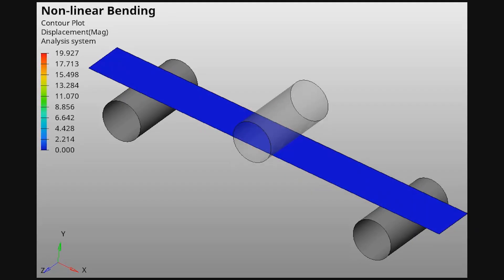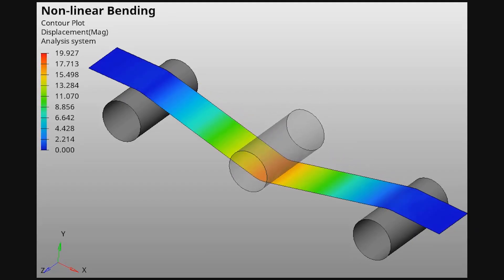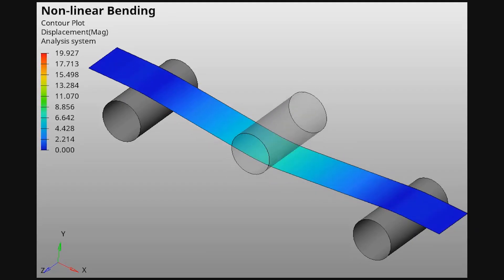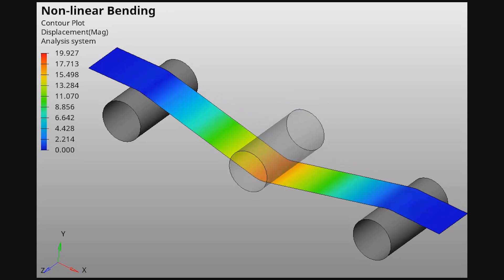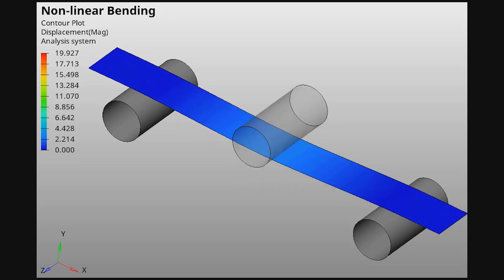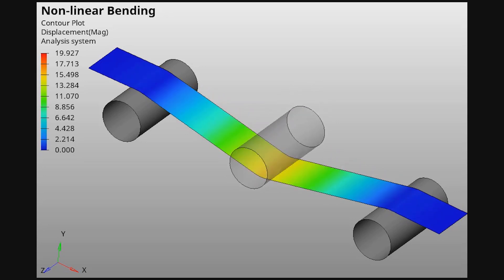In my last video, I gave a brief introduction about non-linear analysis and its types. Today, we will set up boundary non-linearity using HyperMesh and OptiStruct. We will perform a non-linear contact analysis in which we will simulate the 3-point bending of a sheet metal plate. So let's get right into it.